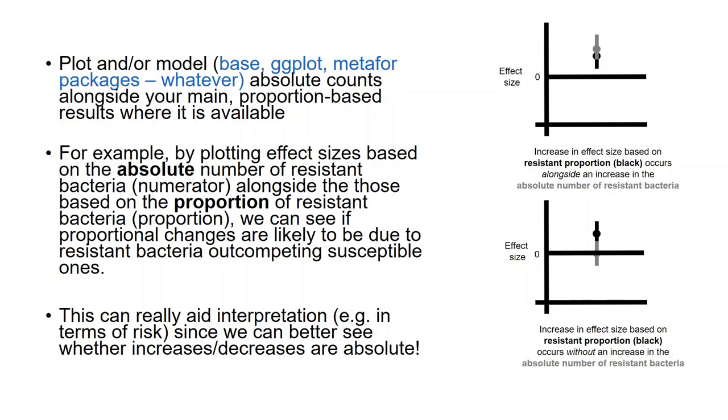And this can give you a sense of whether what you're seeing is an actual increase in your numerator or associated with a change in the denominator. So, for example, if we plot effect sizes based on the absolute number of resistant bacteria alongside those based on the proportions, we can see if the resistant bacteria are growing and increasing in number, or it's just the fact that your susceptible bacteria are being wiped out. And this can really aid the interpretation of your meta-analysis, which can be very abstract as we know.